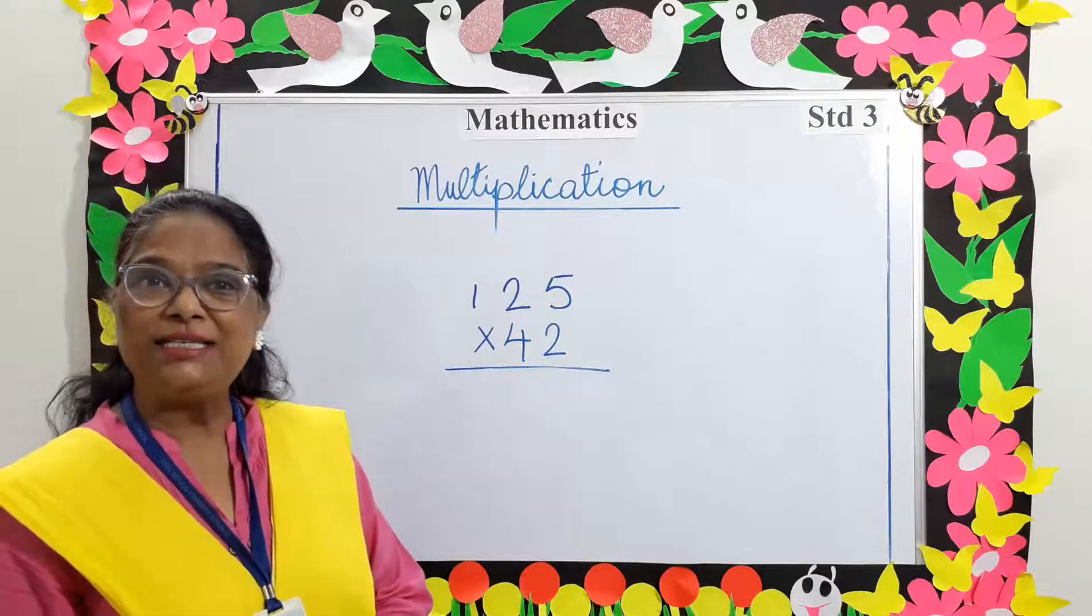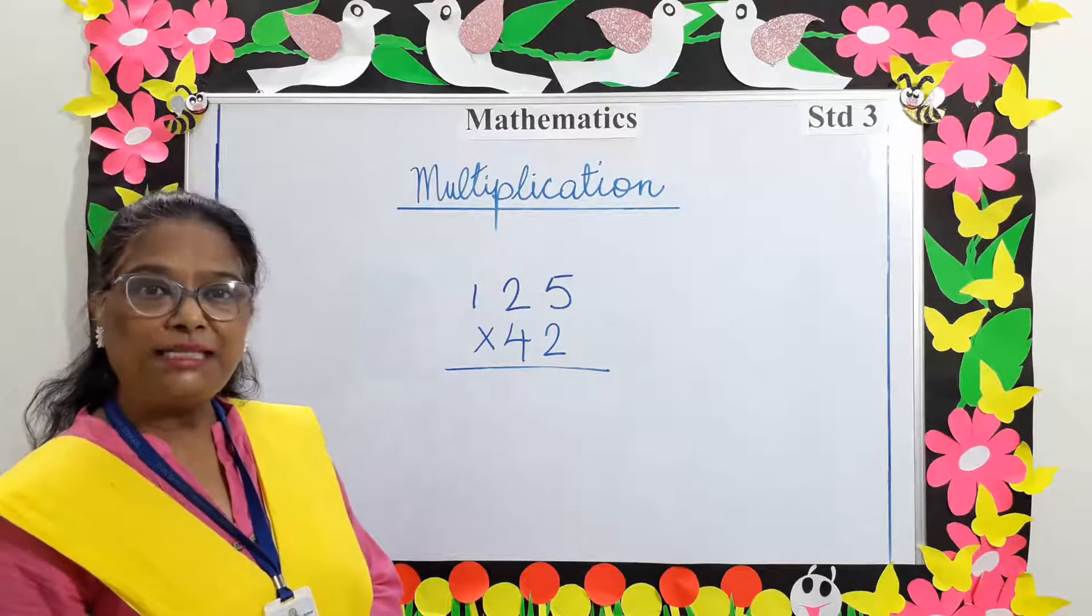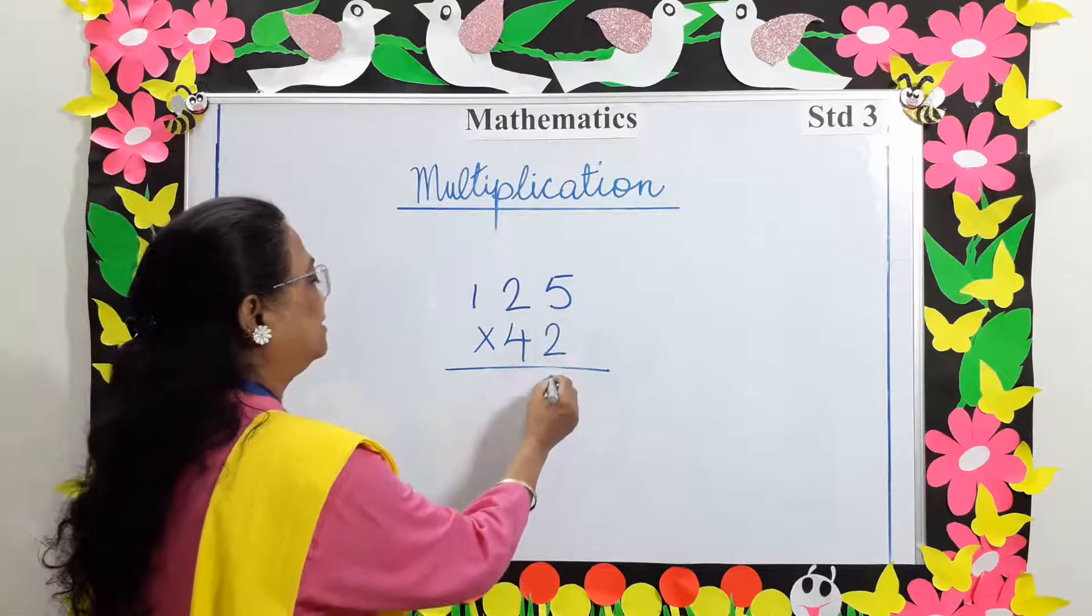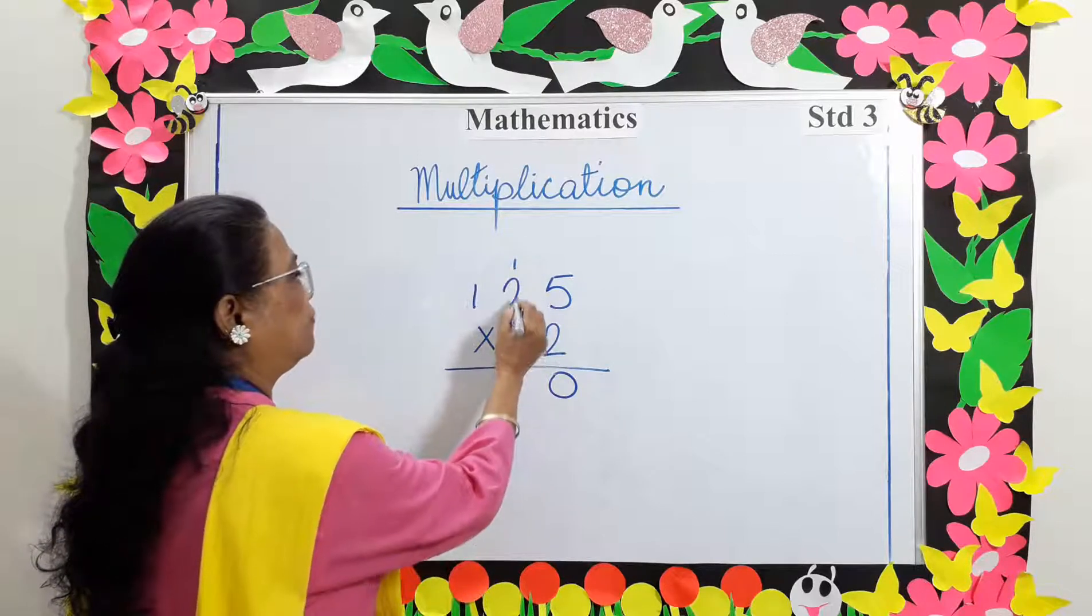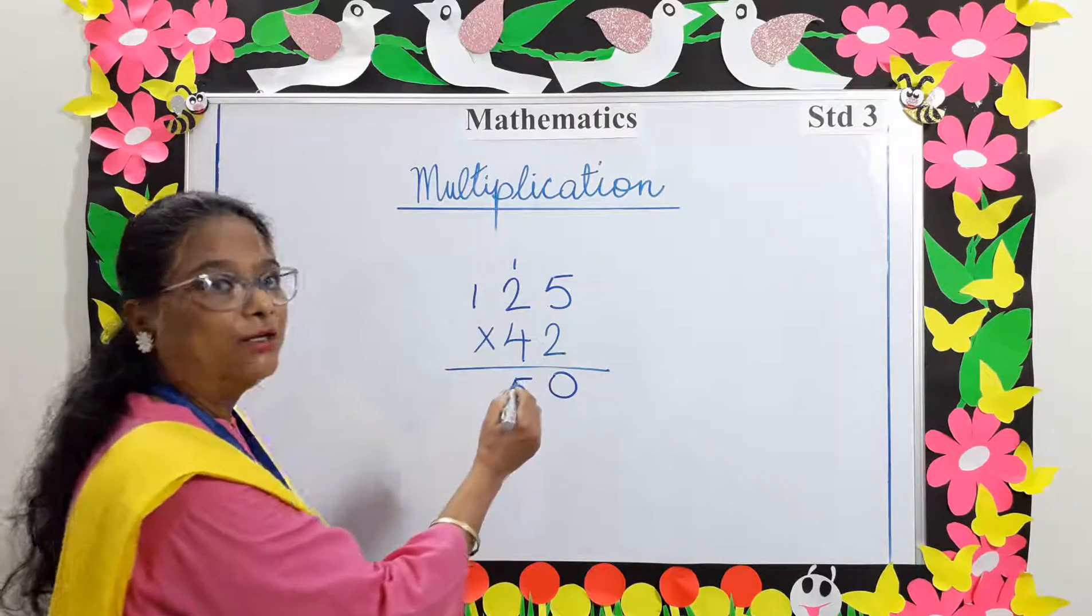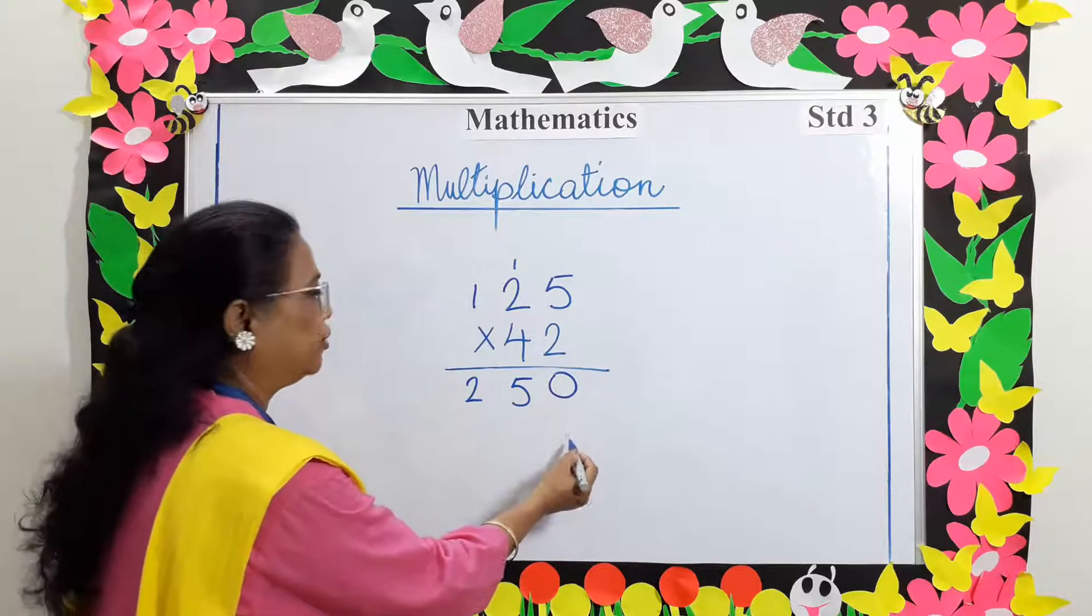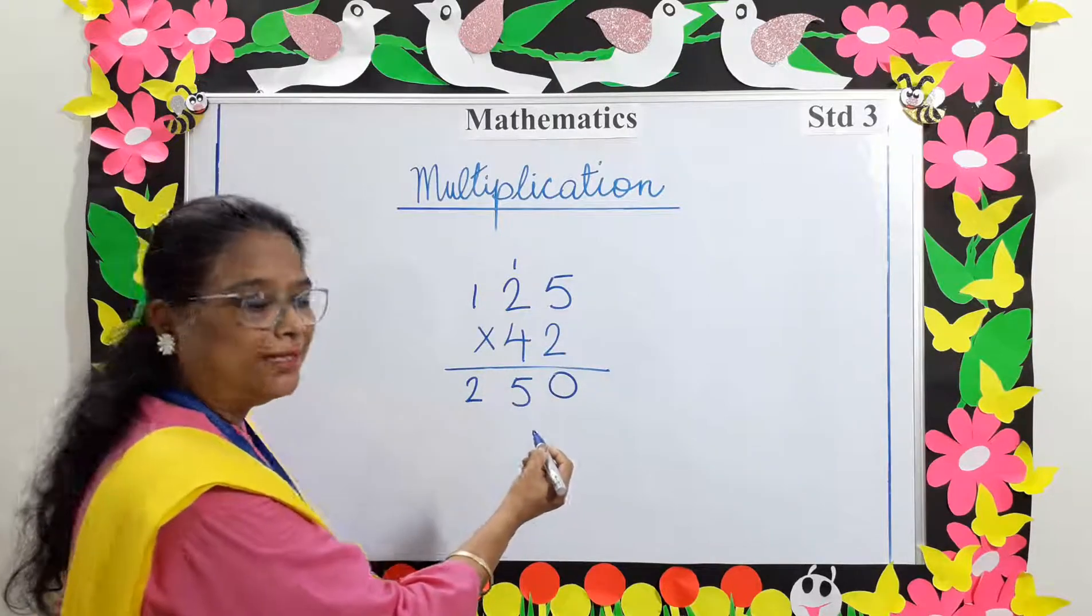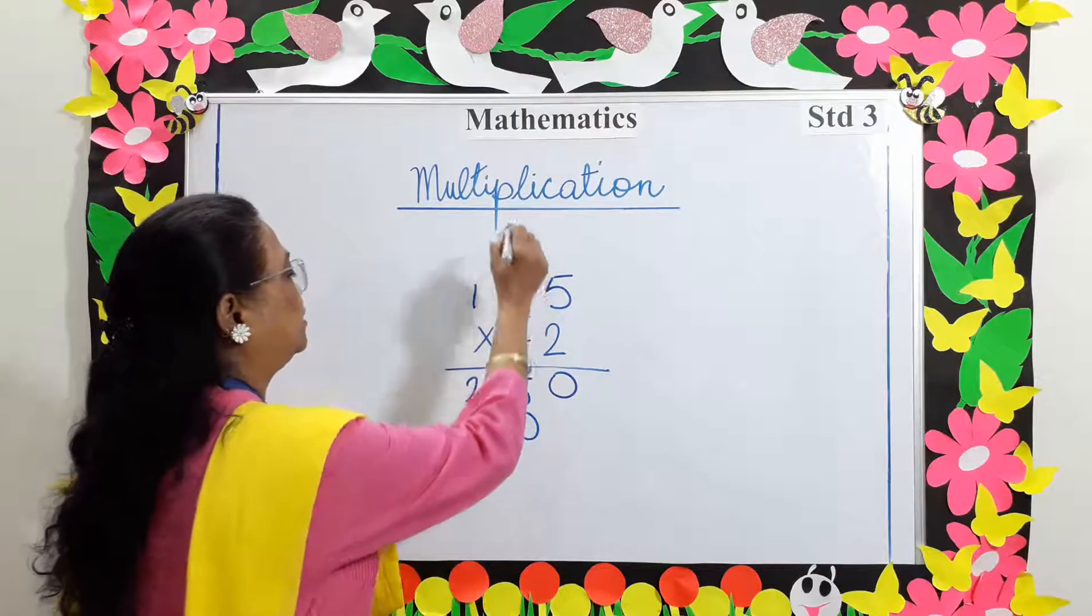Now let's do a simple multiplication sum: 125 multiplied by 42. 2 fives are 10, carry 1. 2 twos are 4 and 1 is 5. 2 ones are 2. Leave the first column, write your answer in the next column. 4 fives are 20, write 0, carry over the 2.